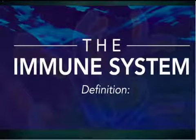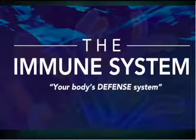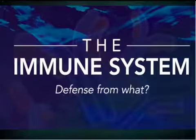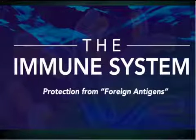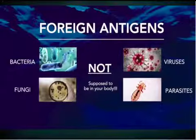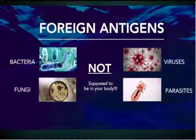What is the immune system? Well, there are so many definitions, but let's look at a real simple one. Think of your immune system as your body's primary defense system — defense against something we call a foreign antigen. Classic examples would be a bacteria, or a fungus, or a virus, or a parasite.